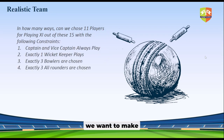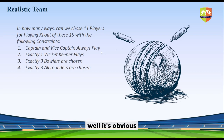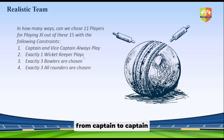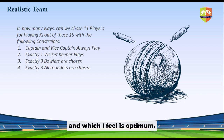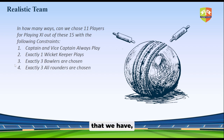The next problem is: we want to make a realistic team. In how many ways can we choose 11 players out of this squad of 15 with the following constraints? The first constraint is the captain and vice captain always play. The second is exactly one wicket keeper plays. Strategy depends from captain to captain and from selectors to selectors, but this is one strategy which is fairly decent and which I feel is optimum.